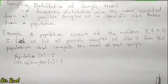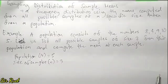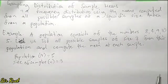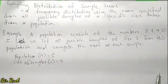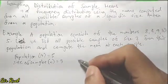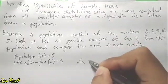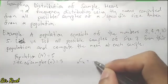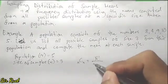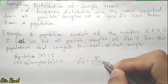The next thing we need to do is determine how many possible samples of size 3 can be drawn from the given population. We will use the combination formula, which is NC(n) = N factorial over n factorial times the quantity (N minus n) factorial.